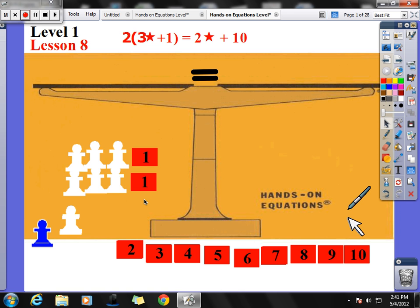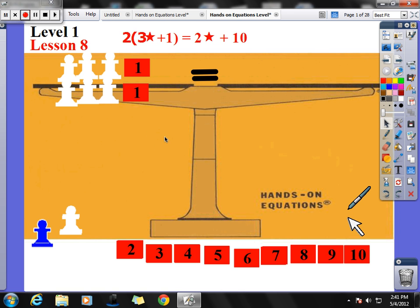And I have 6 star plus 2. And I'm taking all of that, putting it up on my left side of my equation. And then I have 2 star plus 10. Now, once we get the setup, everything else about hands-on equations in lesson 8 is exactly the same as what we've done in the previous lessons.